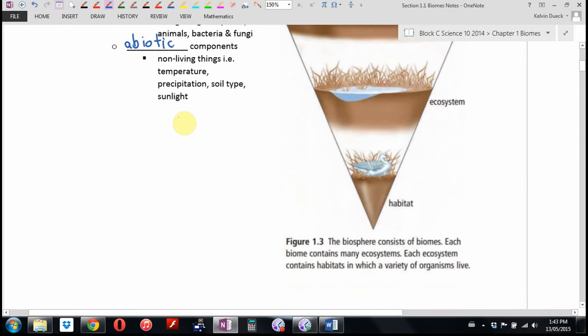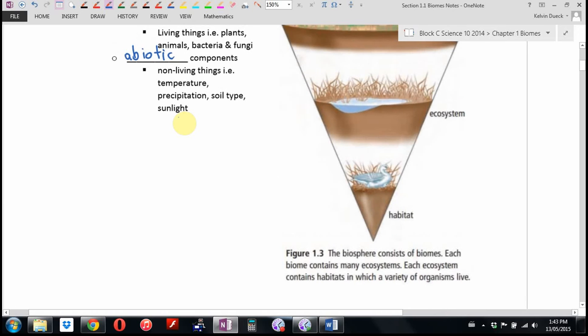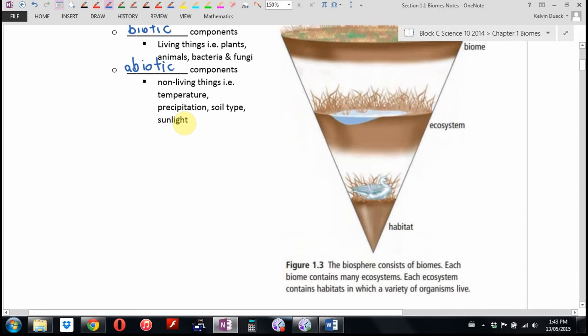This is right from your textbook, figure 1.3. There's a little color picture in your textbook. Yours is black and white. So the biosphere consists of biomes. Each biome contains many ecosystems. And each ecosystem contains habitats in which a variety of organisms live.